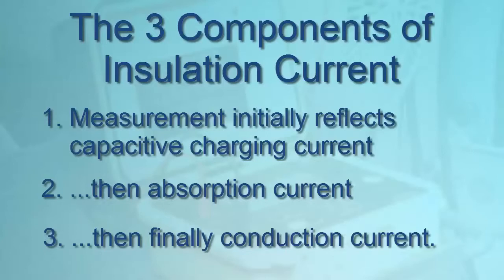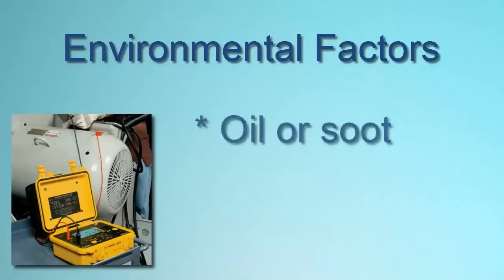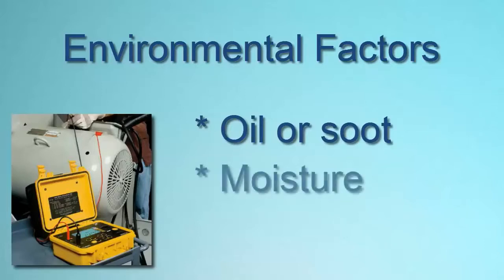Understanding how these individual currents contribute to the total insulator current can help you correctly interpret the results you receive when performing a test. It's also important to be mindful of how environmental factors can affect resistance. For example, oil or soot on the equipment surface can lower insulation resistance. If any equipment surface temperature is at or below the dew point of the ambient air, thermal moisture forms, which can significantly lower the equipment's resistive value.